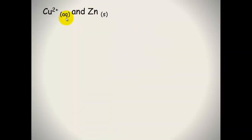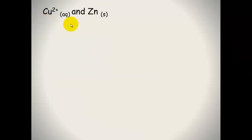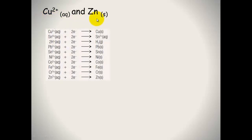So a question will ask you whether two species are going to form a redox reaction with one another. Here we have copper²⁺ ions and zinc solid. I've cut out a section of the electrochemical series, and you can see the first row is copper ions plus electrons forming copper solid.